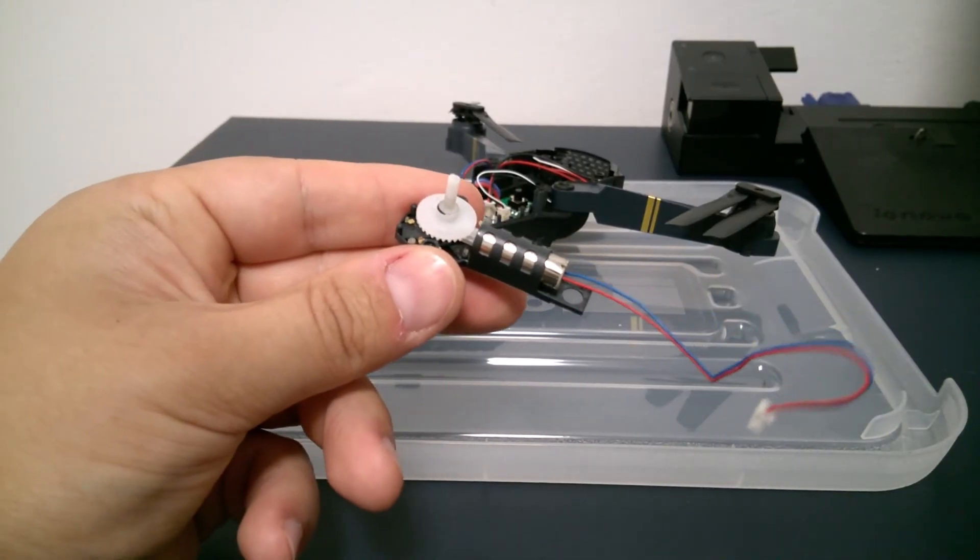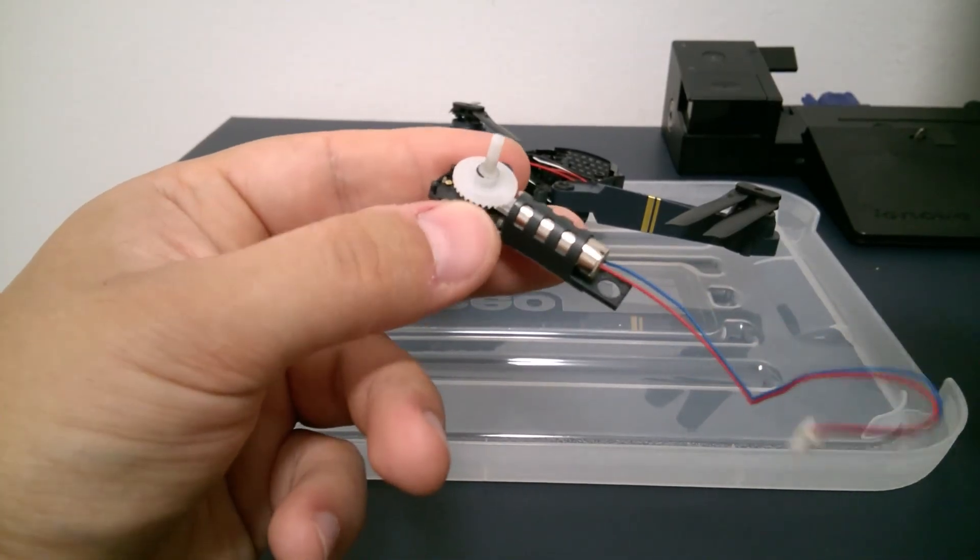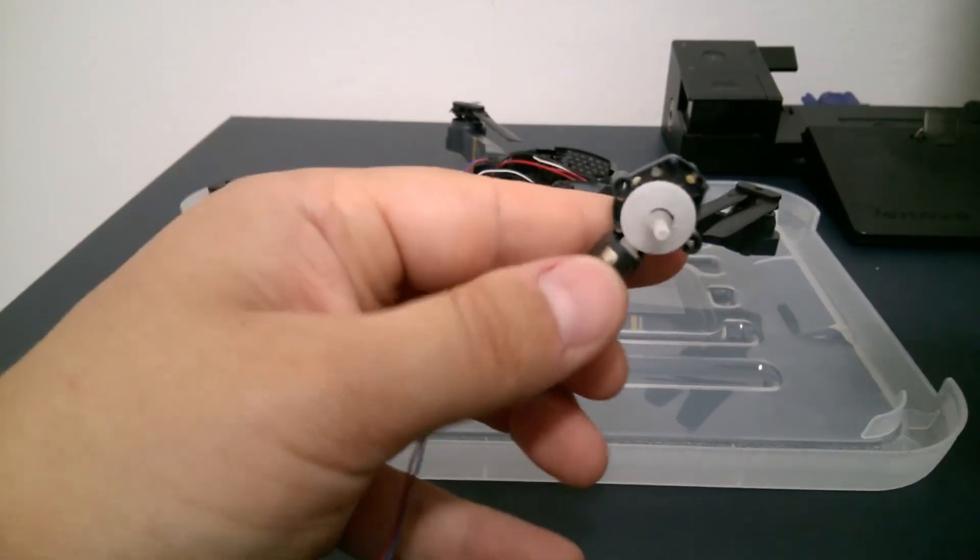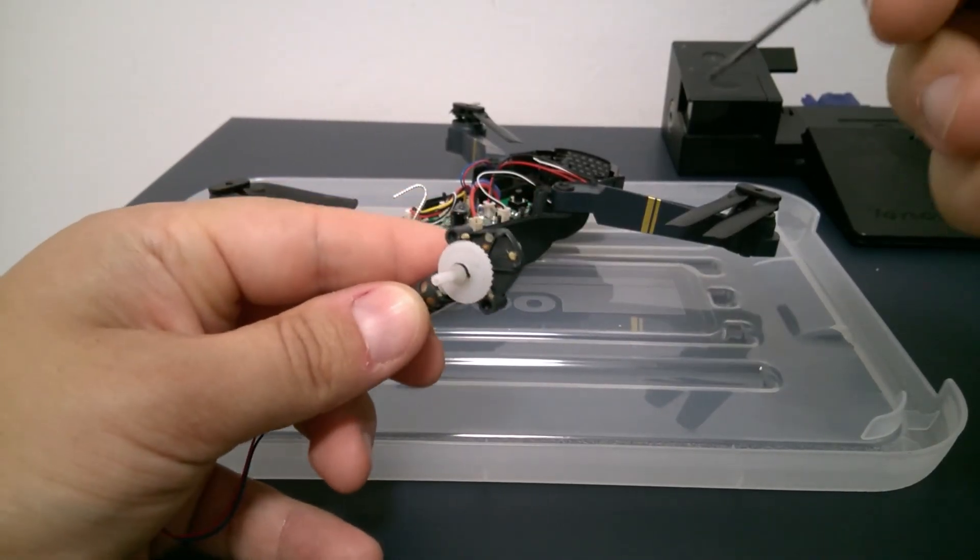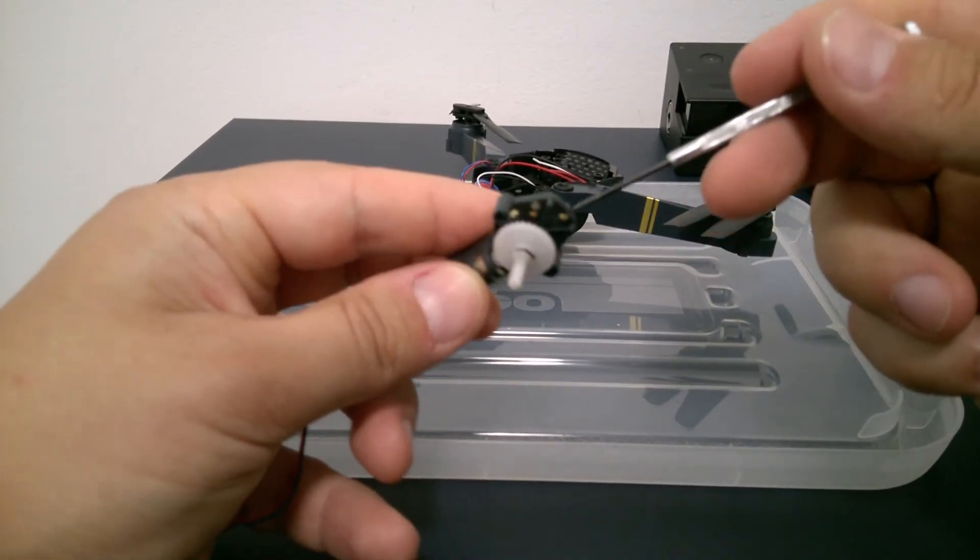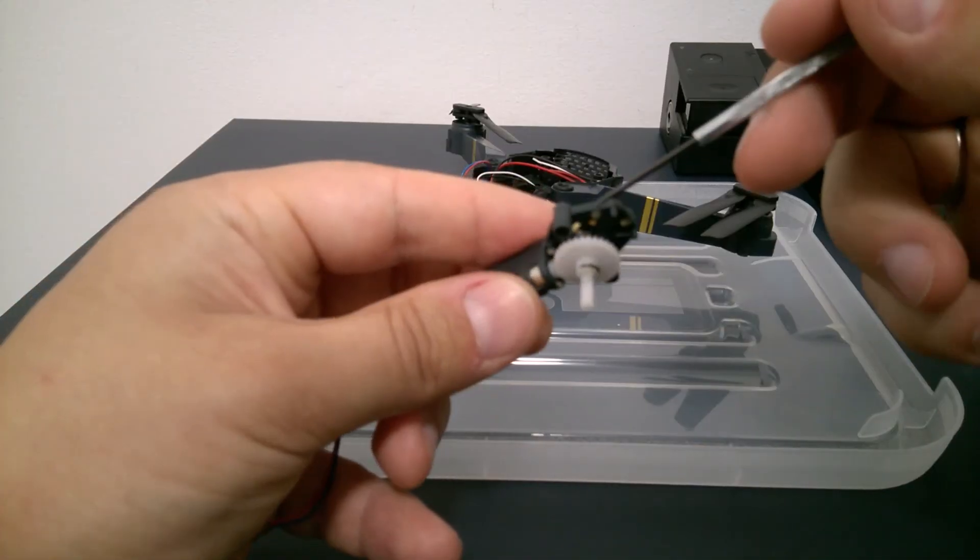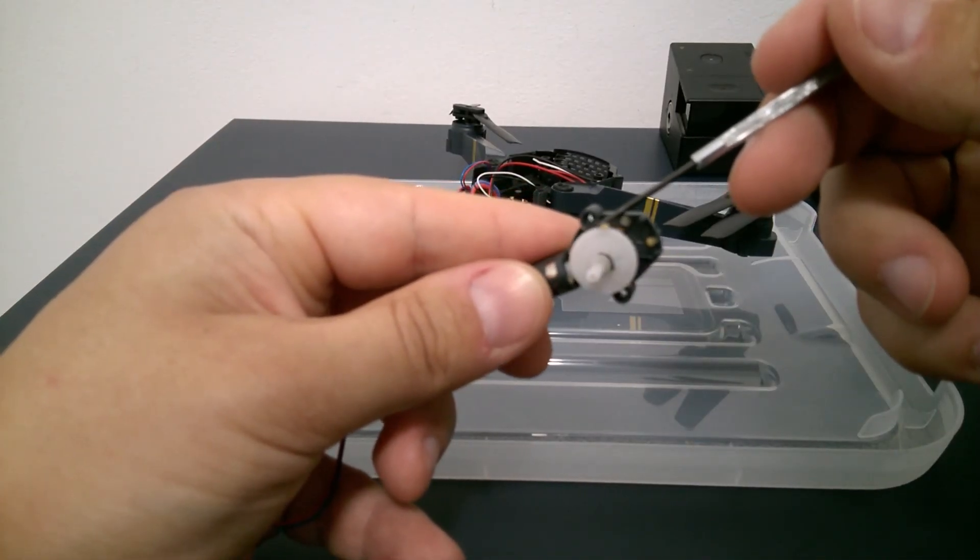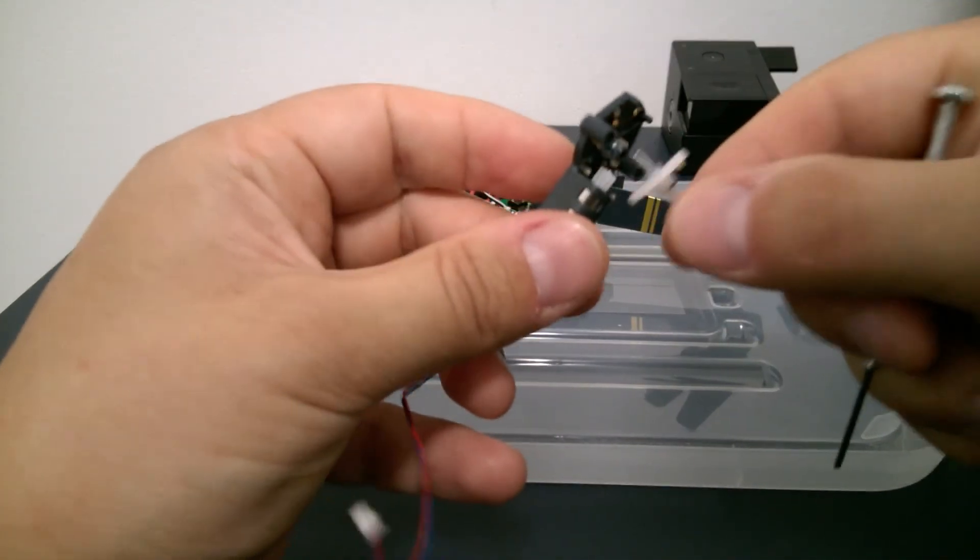So you can see there's a lot of sand particles in it. And that was the reason why my gears got stuck. So you see there's one big particle of the sand. You can remove it.